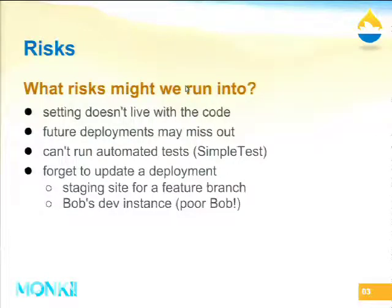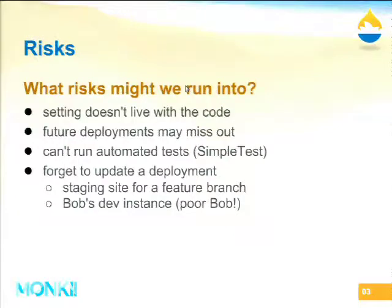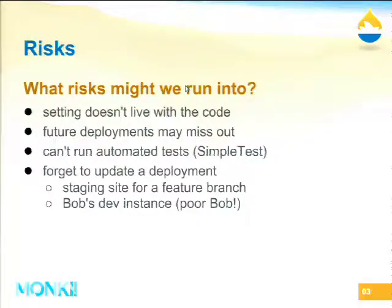The risks of working manually like that: first of all, the settings and configuration don't live with the code. Hopefully your new feature is going into version control. If there's a setting relevant to that feature that it depends on, ideally we'd like that setting to live with the code in version control, because that means future deployments won't miss out on it. Sometimes you'll be developing a feature branch in parallel to another developer, and if you don't keep configuration changes in the code, you won't be able to do things like automated testing.